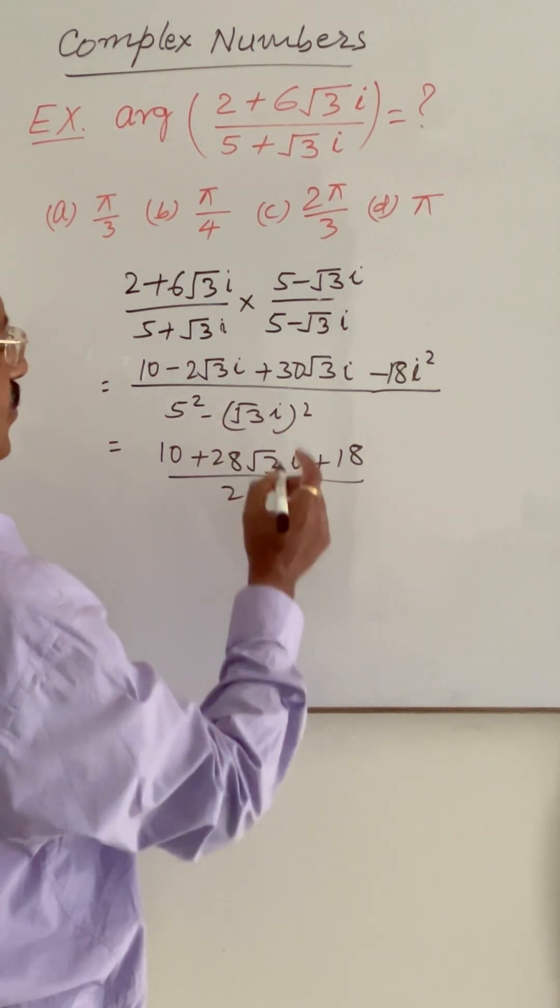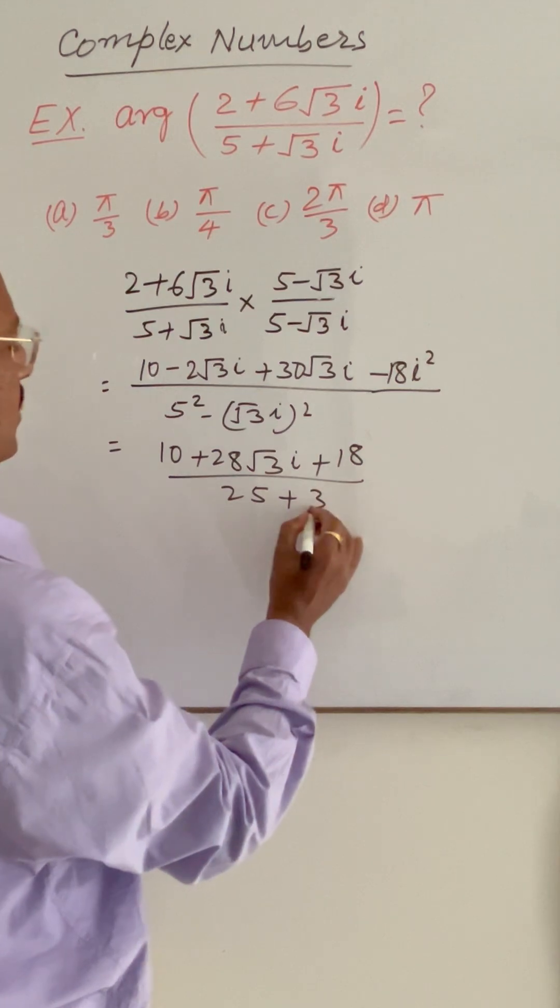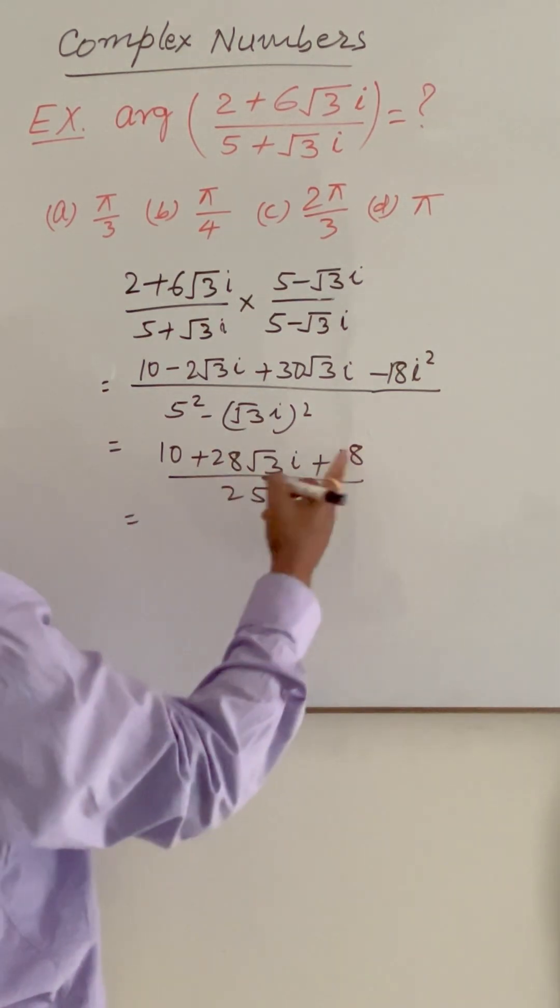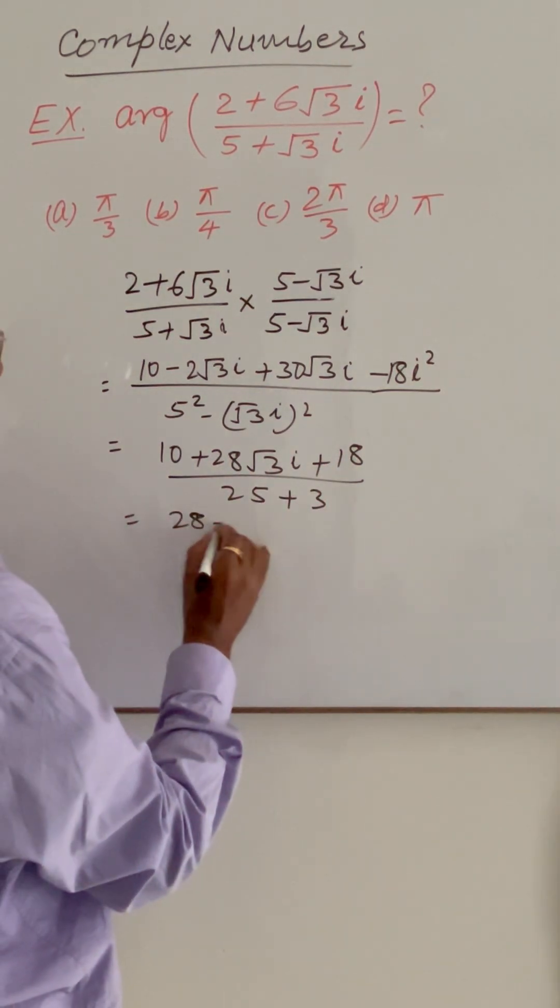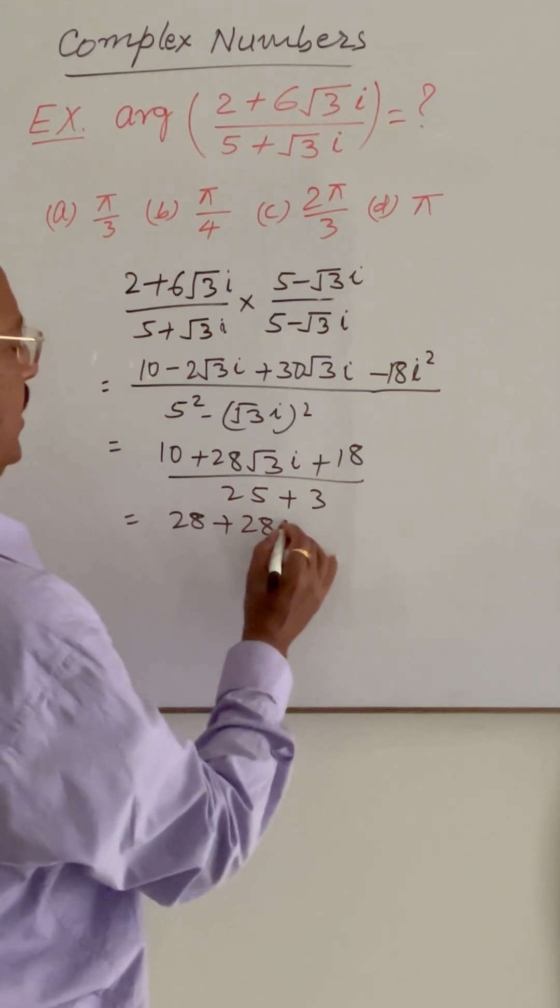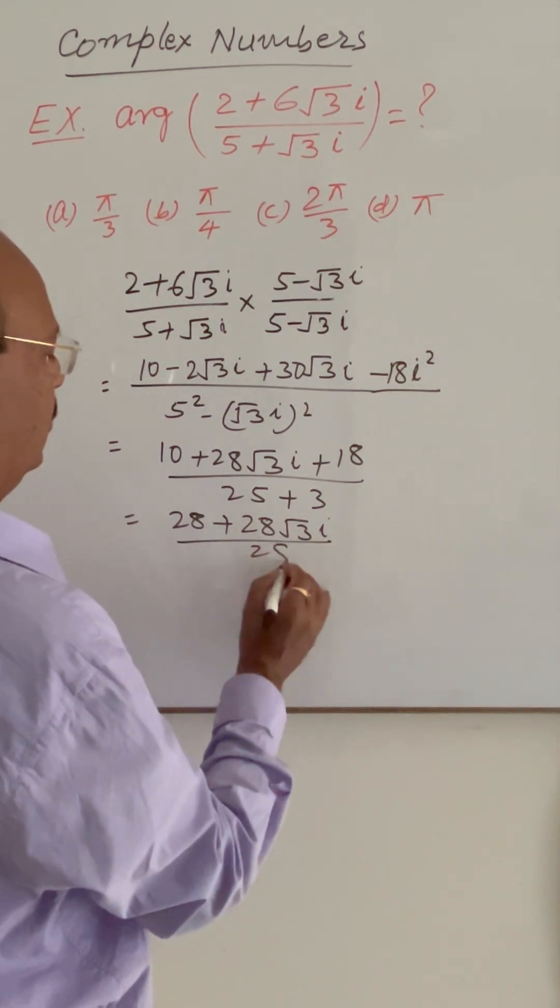I square is minus 1, so plus 3. And 10 plus 18 is 28 plus 28 root 3i upon 28.